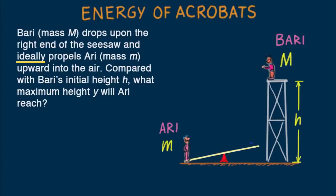The term ideal means we can neglect inefficiencies such as air resistance, friction, or heat generated as the seesaw rotates. This doesn't have to be a complex energy transfer problem. We don't need to find the velocity of Bowery at the bottom of his jump, then do similarly for Ari. If we apply conservation of energy, all we need to do is look at the initial and end points — since the system is ideal, initial and final energies are the same. We equate Ari's acquired potential energy at the top of his trajectory to Bowery's initial potential energy.